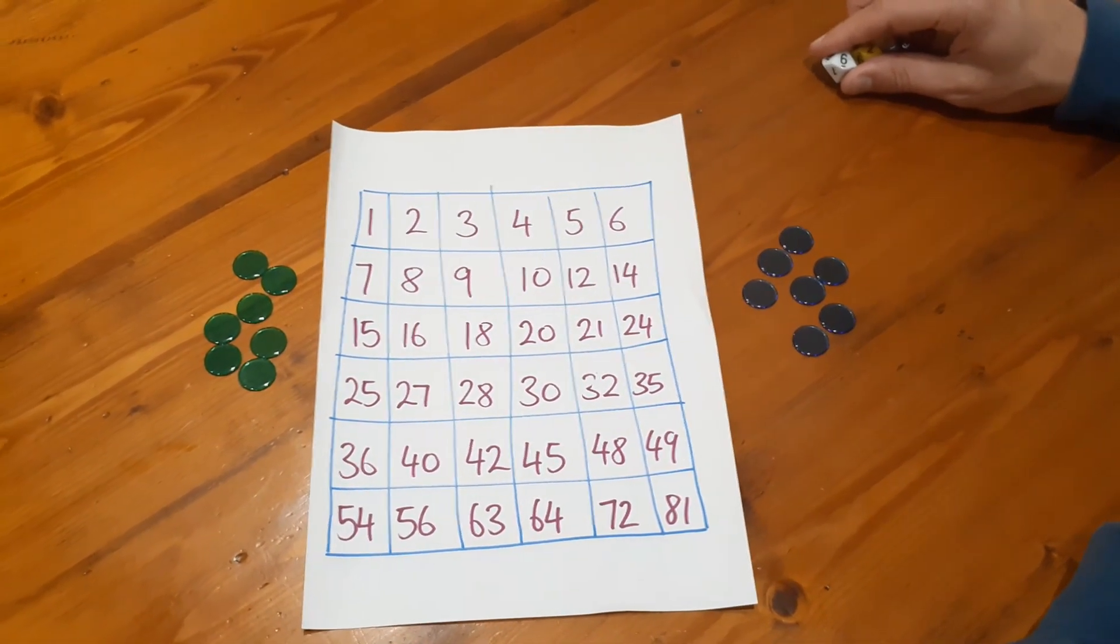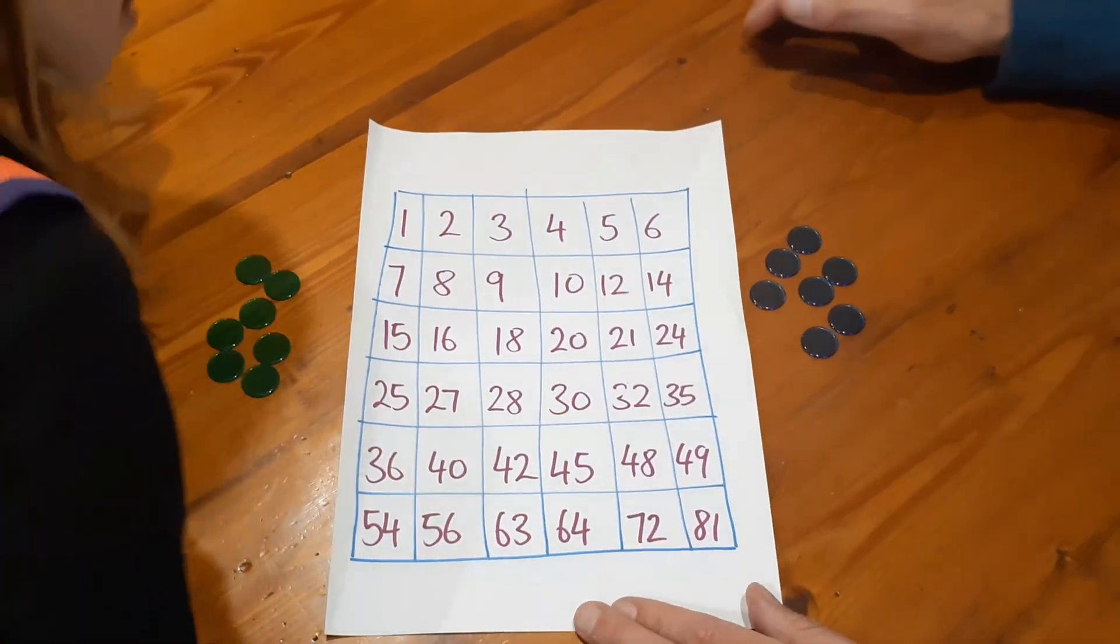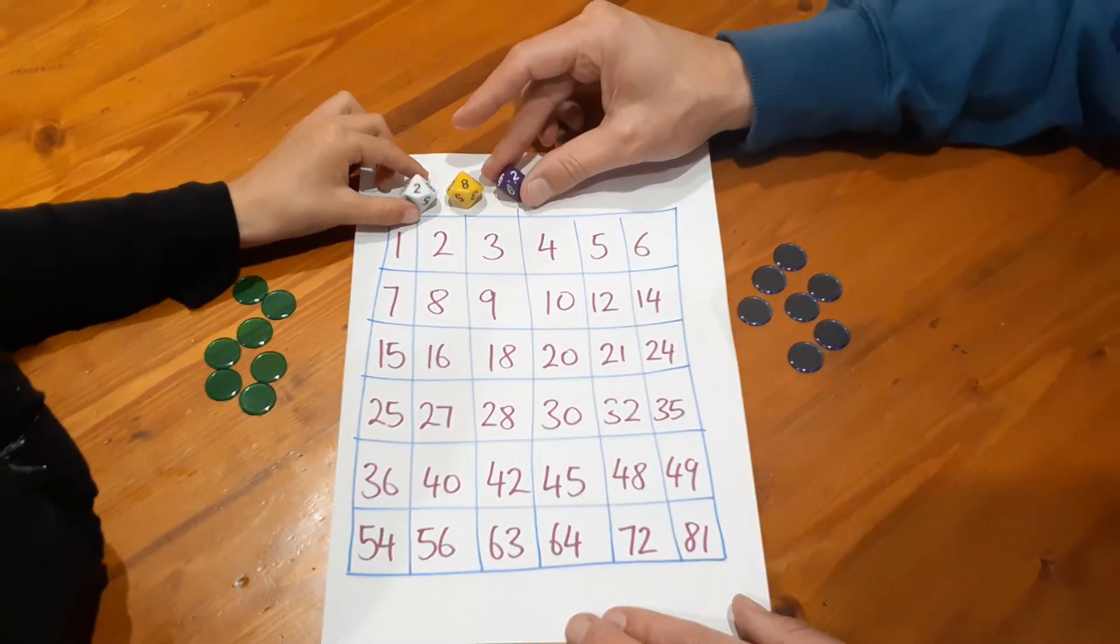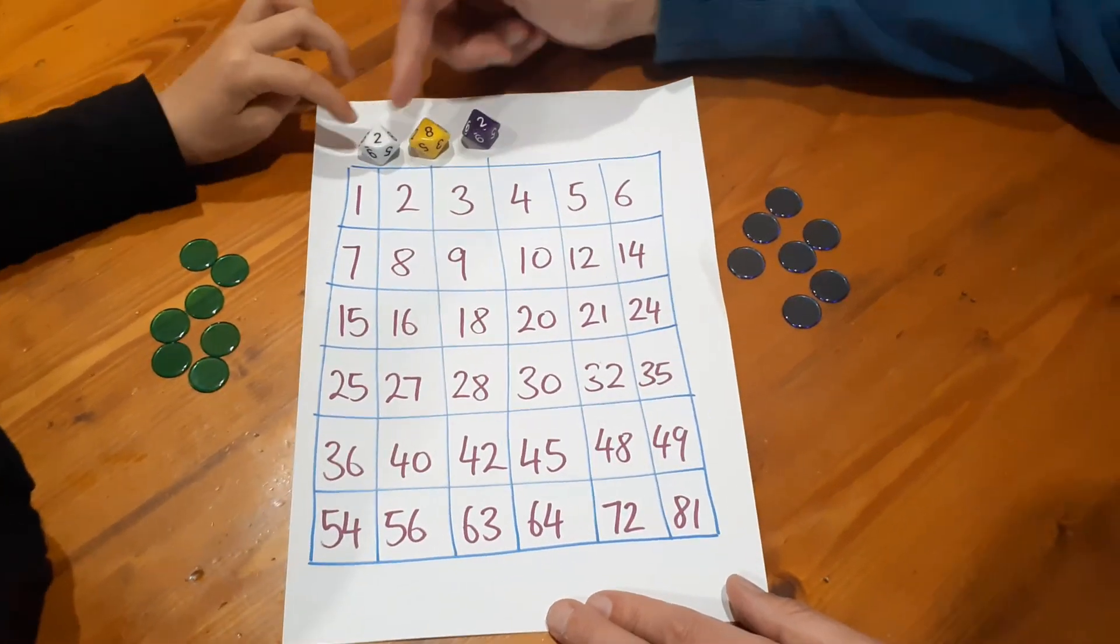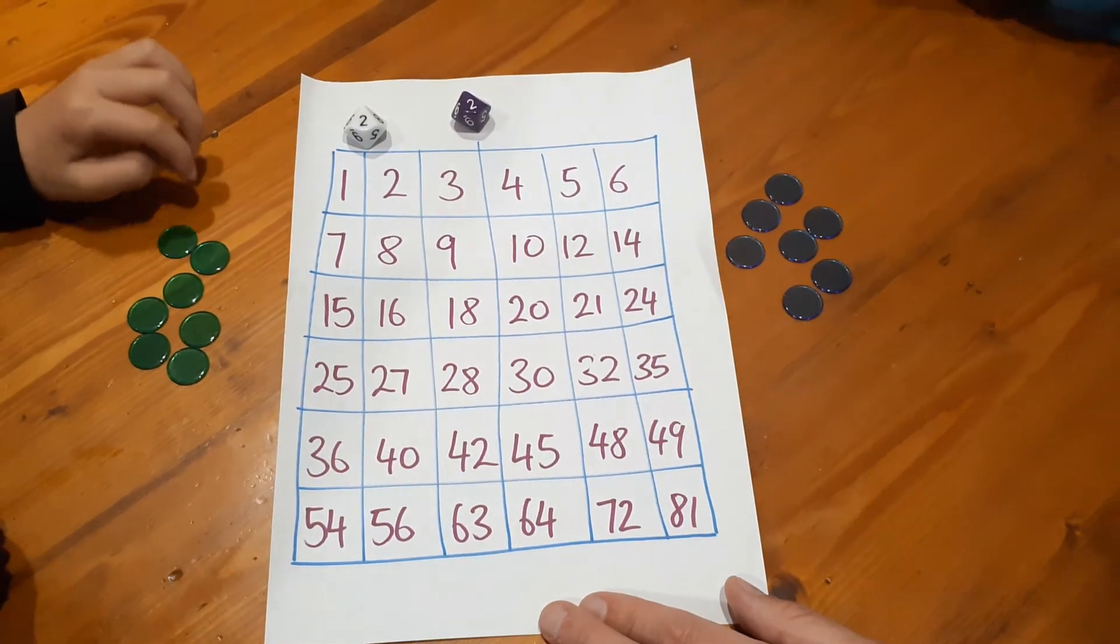Now the way you do that is, Nash, you go first and I'll explain what to do. So Nash is going to roll the three dice and then he is going to choose two of them to create a multiplication equation. So in this case he could do 2 times 8 or 2 times 2. Two times two, okay, and what's 2 times 2?